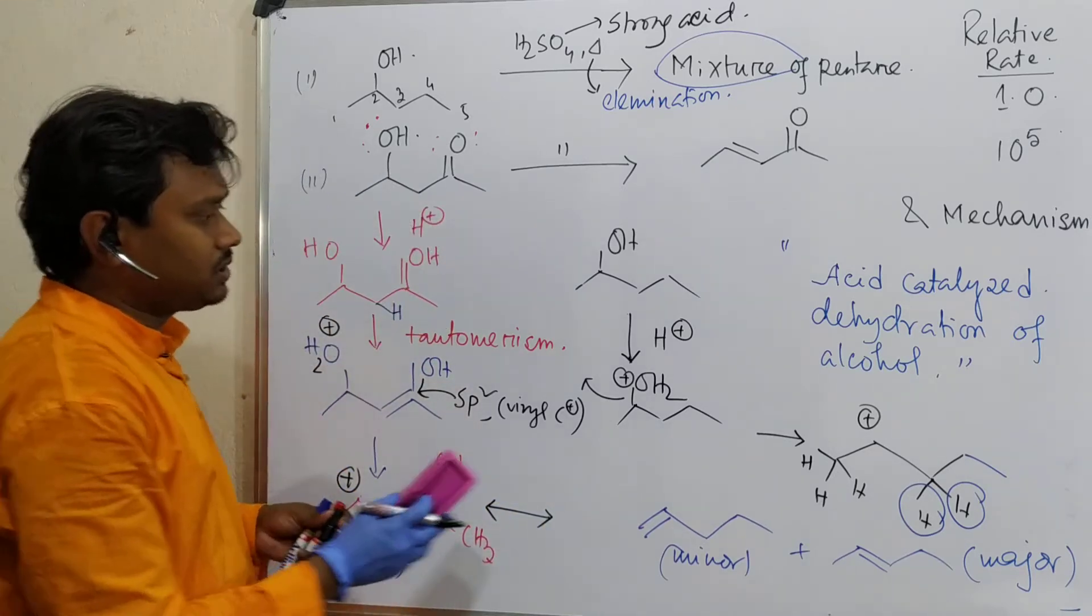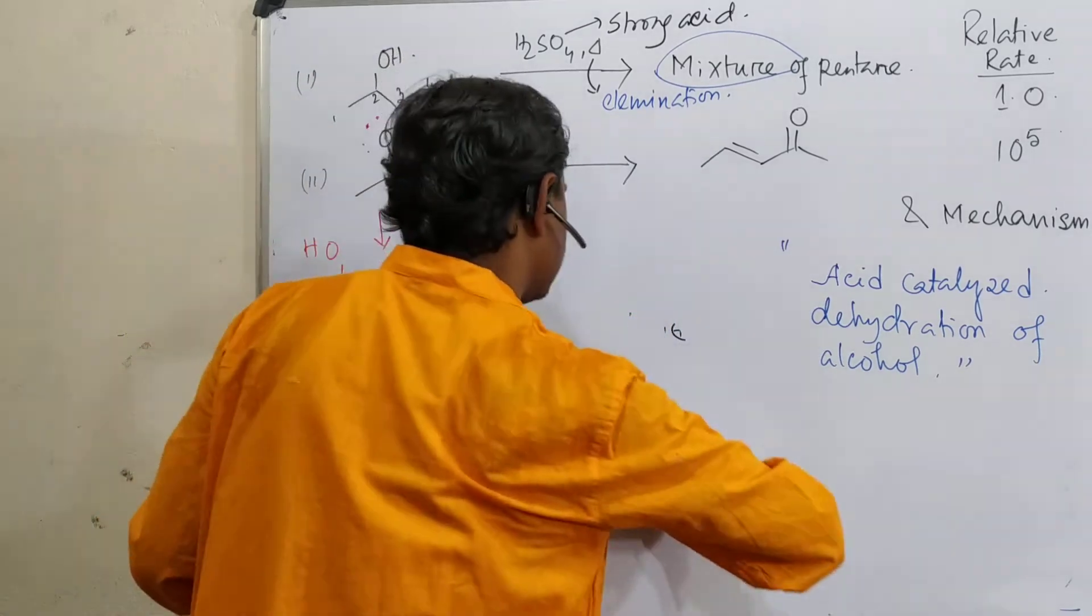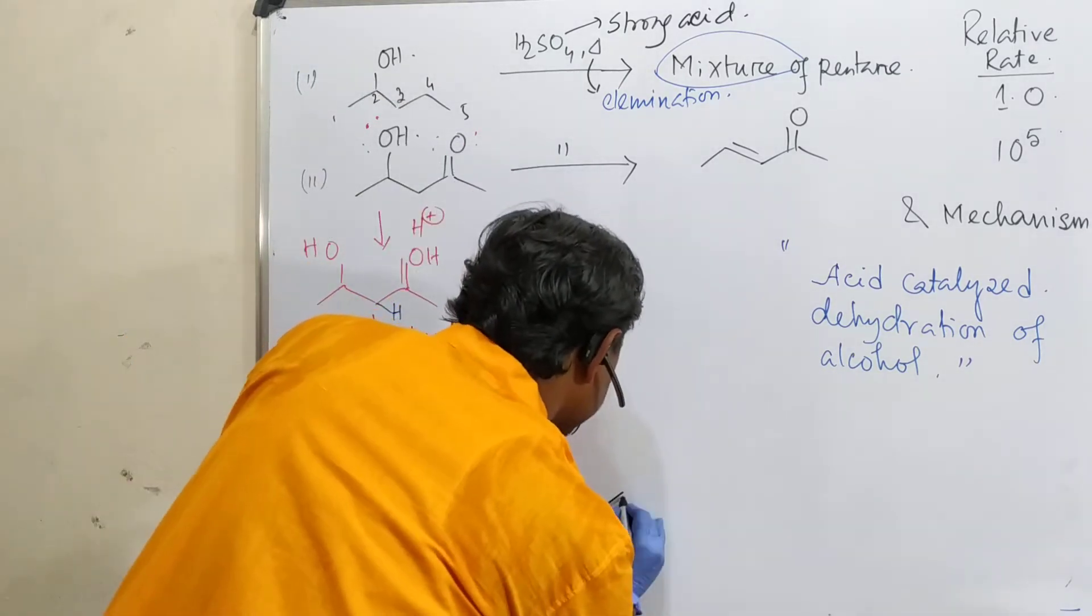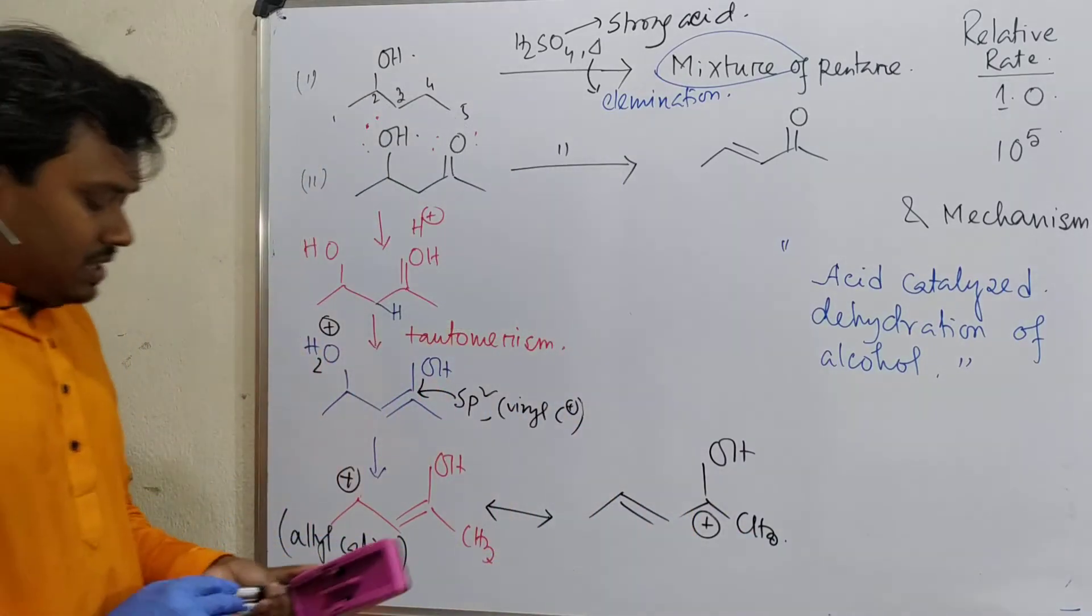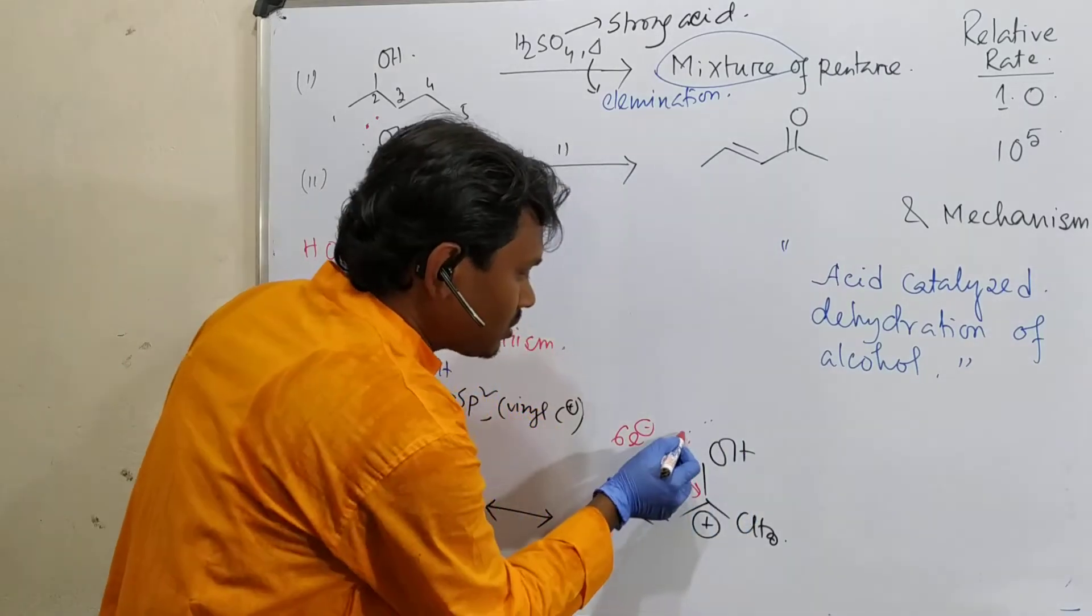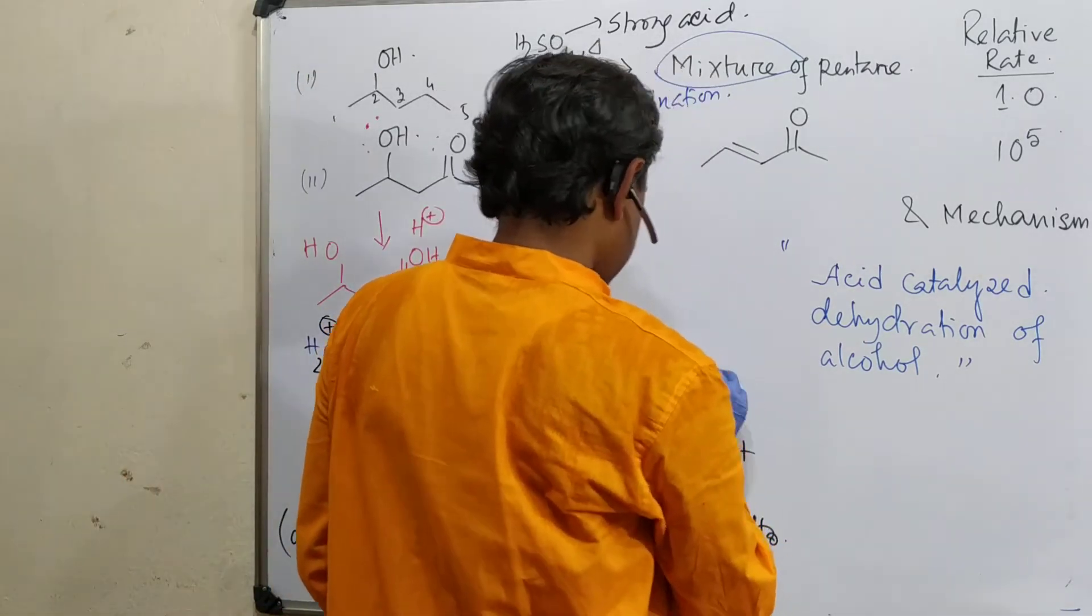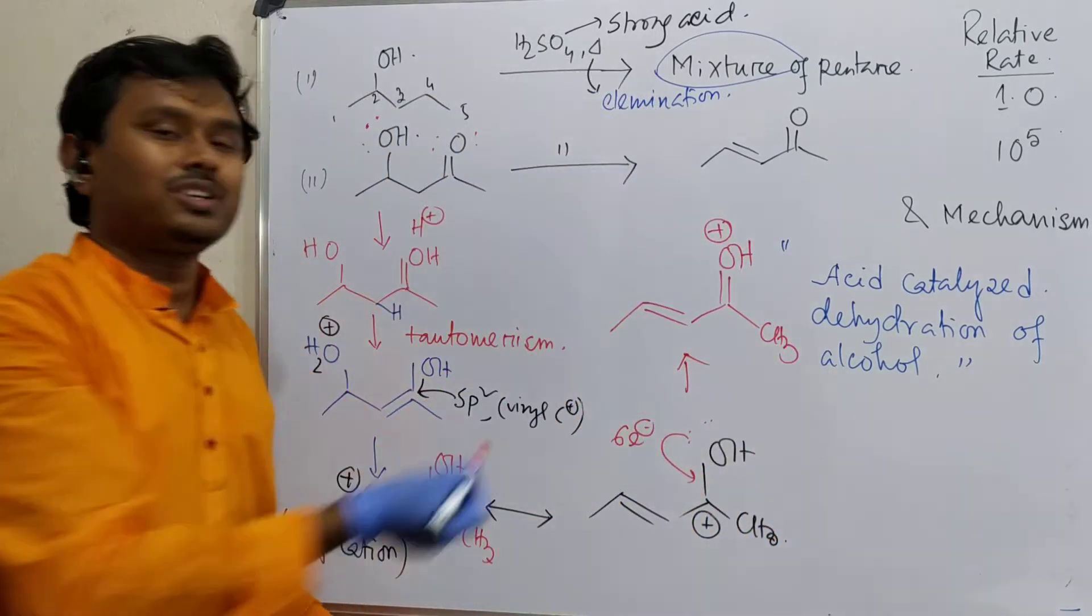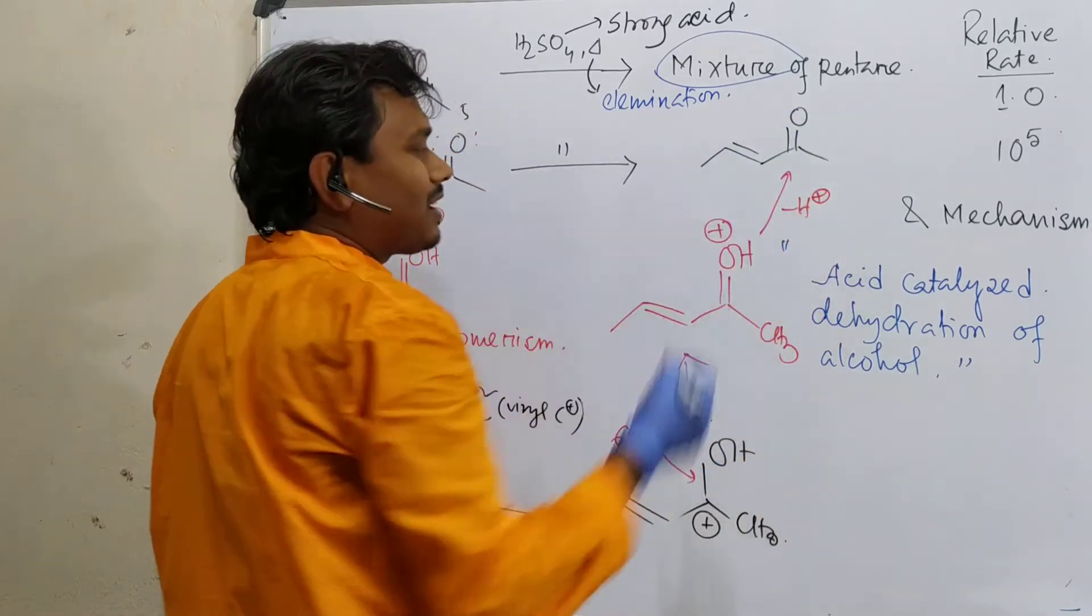This is allyl cation and that is resonance stabilized. What is the resonance structure? This carbon atom is a six electron species. And oxygen has lone pair, so oxygen will give its lone pair such that everyone could be octet filled - basic rules of resonance. What will be the product? This. See, this is the protonated version. After removal of one H plus, what will it result? It will result in carbonyl compound.